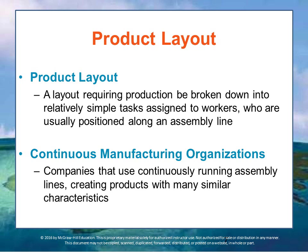Finally, the third main layout is the product layout, which requires that production be broken down into relatively small tasks assigned to workers. This is the assembly line factory layout — the simple tasks for workers and machines are usually positioned along an assembly line. Workers remain in one location, and the product is brought to them. Each person performs his or her required task on that particular product as it moves along the assembly line. Companies that use assembly lines are known as continuous manufacturing organizations because they run continuously, creating product after product with similar characteristics.